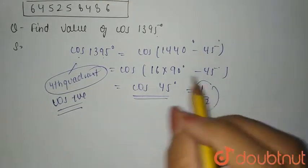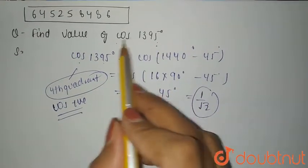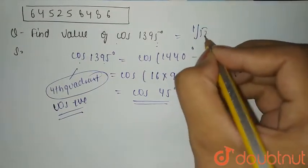Cos 45 degree is 1 by root 2. So the value of cos 1395 degree is 1 by root 2, and this is your answer. Thank you.